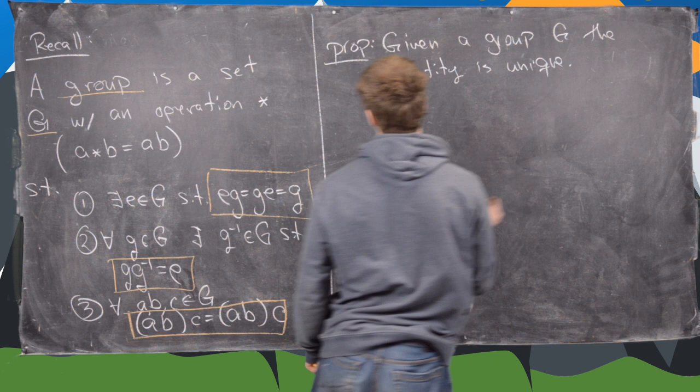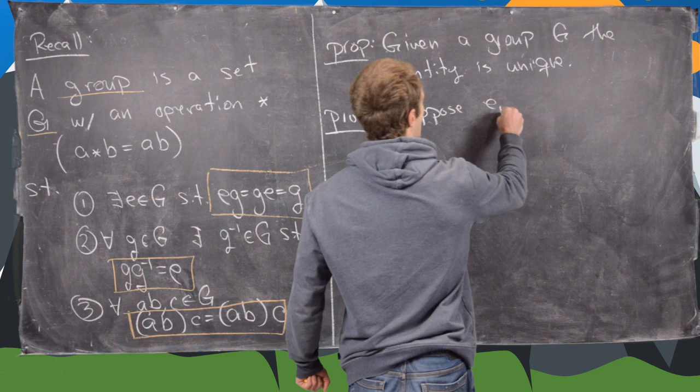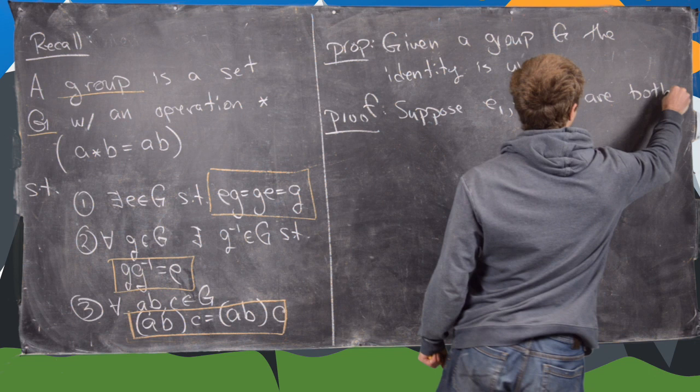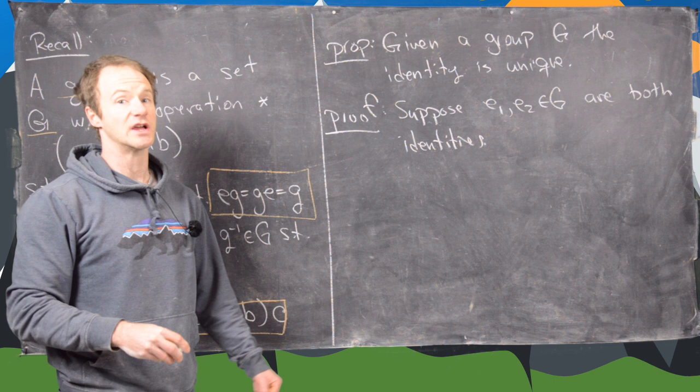So what we're going to do is start by assuming that we have two identities. So let's suppose that E1 and E2 in G are both identities. And what we'll end up with is that E1 equals E2. And this is actually super short. So we'll start with E1.